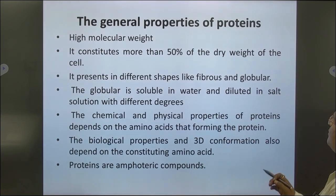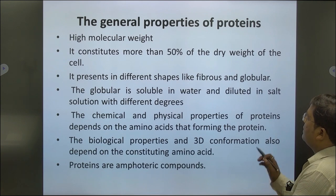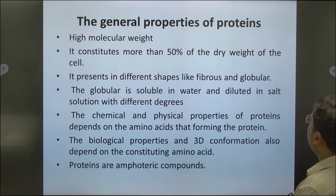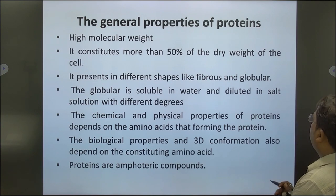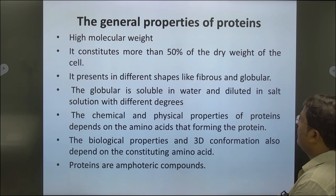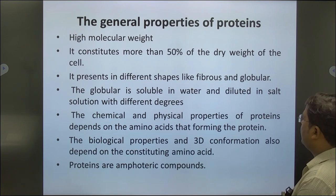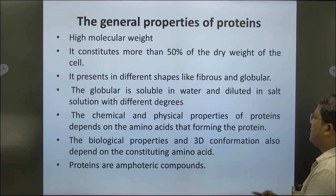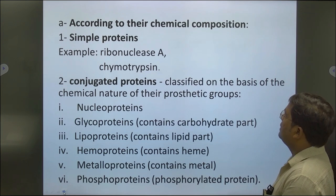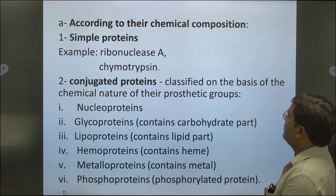The general properties of protein include: it has a unique sequence of amino acids; proteins have high molecular weight; it constitutes more than 50% of the dry weight of cells; it exists in different shapes like fibrous and globular; globular protein is soluble in water and diluted salt solution. The chemical and physical properties of protein depend on the amino acids that form the protein. The biological properties and 3D conformation also depend on the constituting amino acids. Proteins are amphoteric compounds. Simple proteins include ribonuclease A and chymotrypsin.